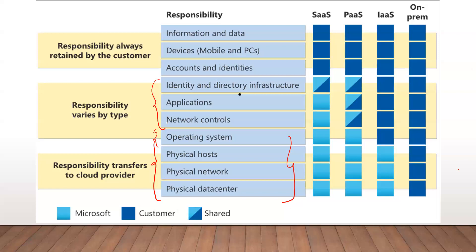In the SaaS model, your application is also managed by the cloud provider — you don't have access to the underlying infrastructure or the background of the application. The shared responsibility here is identity and directory infrastructure: you need to set up who can access your application and what level of access users will have. Azure manages how the application is set up in the background, including system admin access. Regardless of the model you choose to adopt, responsibility for your information, data, and identity management always lies with you.